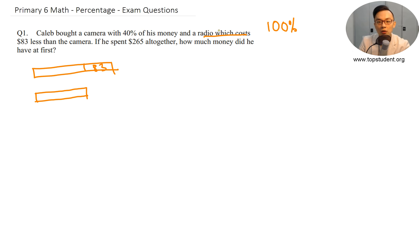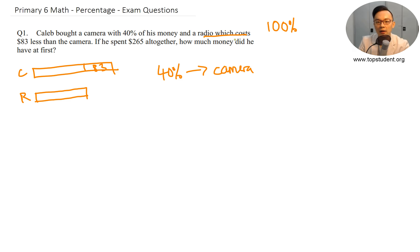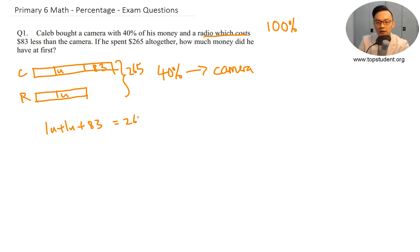I figure out which is on top and below — radio costs $83 less than the camera, so radio is below and camera is on top. Caleb bought a camera with 40% of his money. So I have one unit for the camera and one unit for the radio, and together they spent $265. So the cost of the camera — 1u plus 1u plus 83 equals $265.